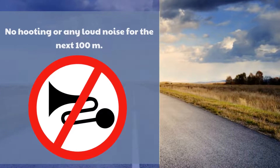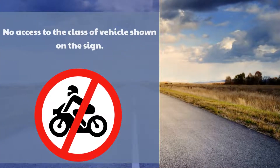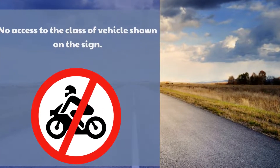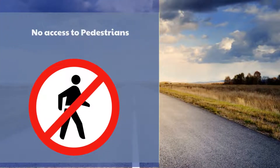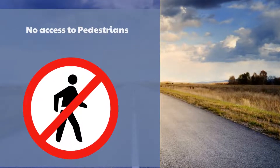This sign indicates no hooting or any loud noise for the next 100 meters. This sign indicates no access to the class of vehicle shown on the sign — in this case, no access for motorcycles. This sign indicates that there is no access for pedestrians.